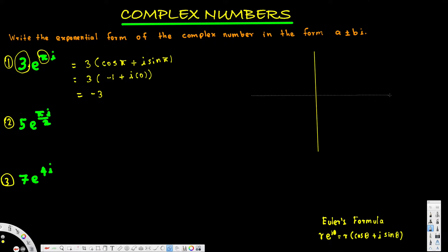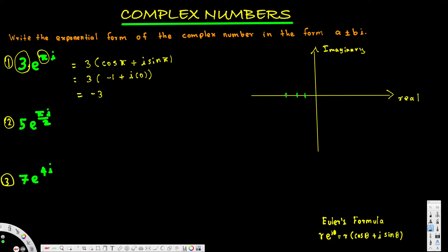If we draw this on a graph — the real part is always on the x-axis and the imaginary part is on the y-axis. For this one we only have the real part, which is negative 3, so we have 3 units to the left. The angle measured from the positive x-axis is 180 degrees, or π radians.